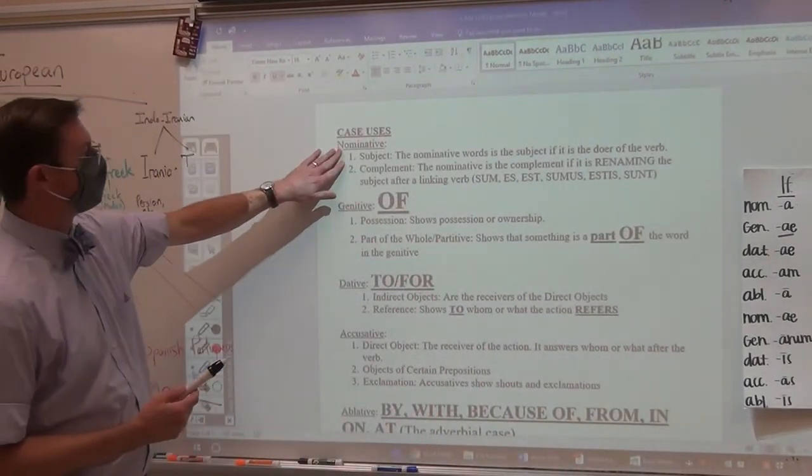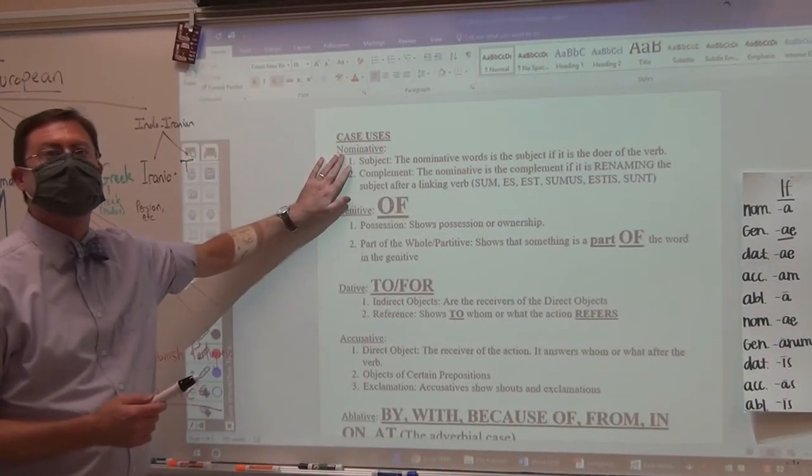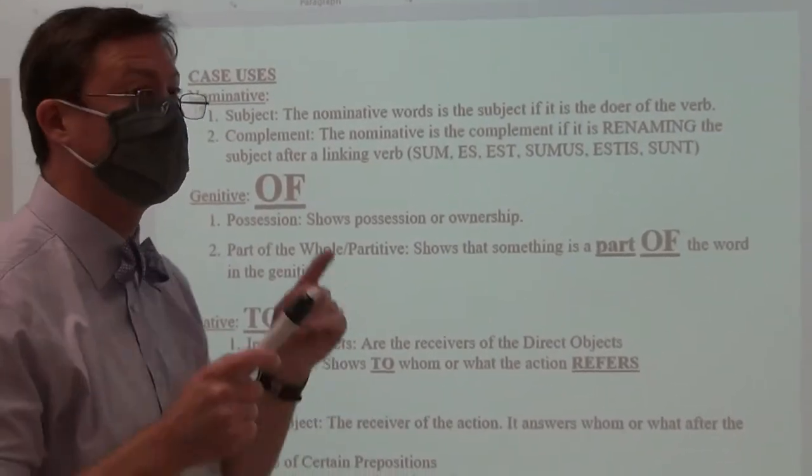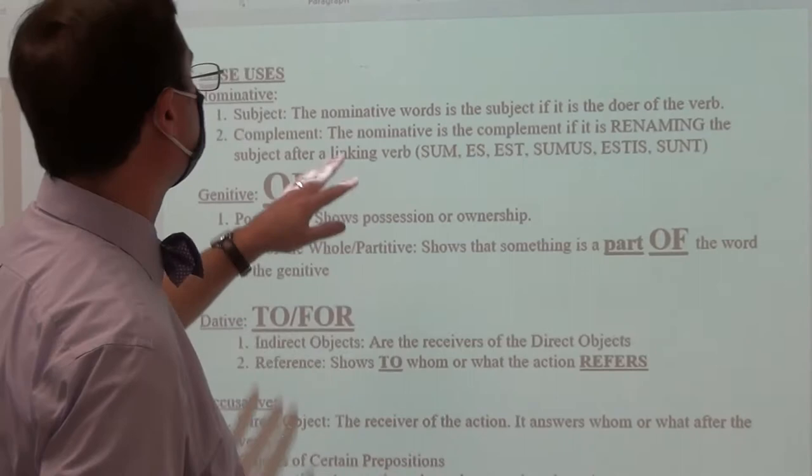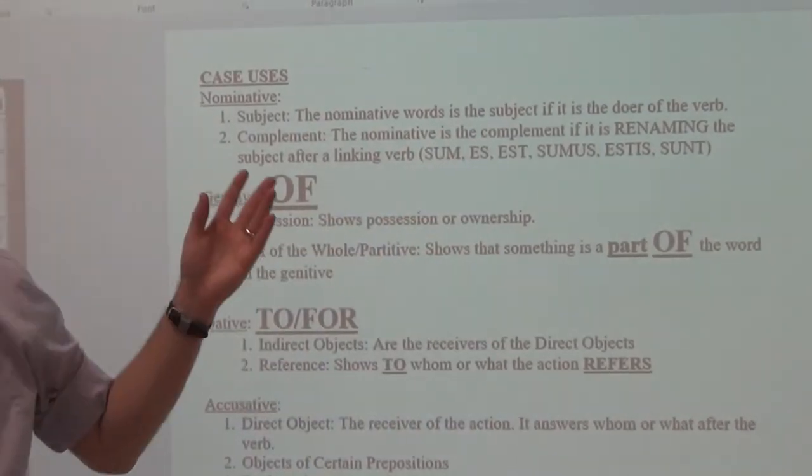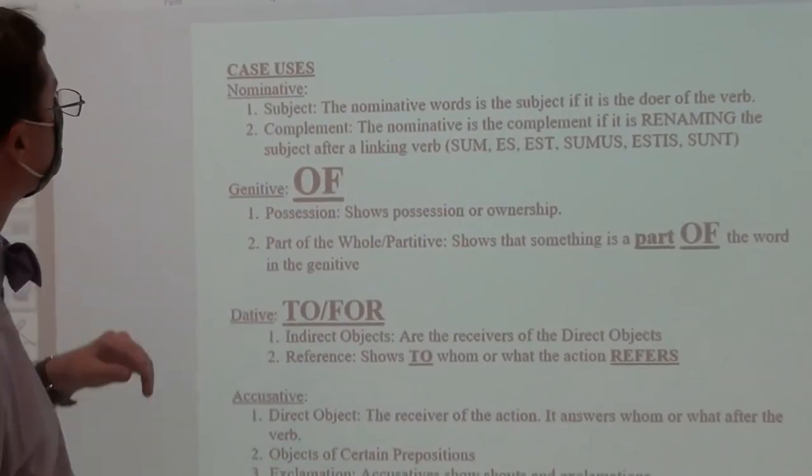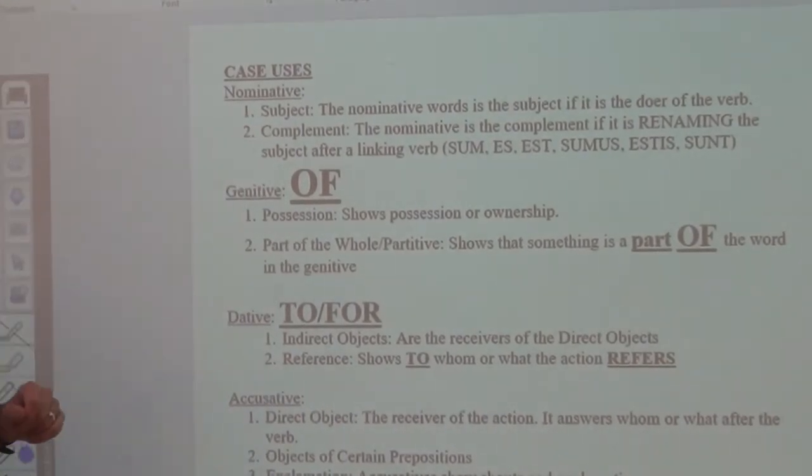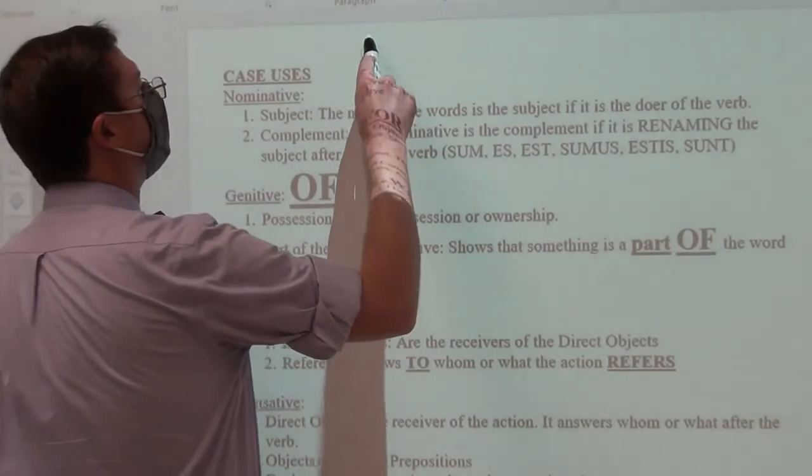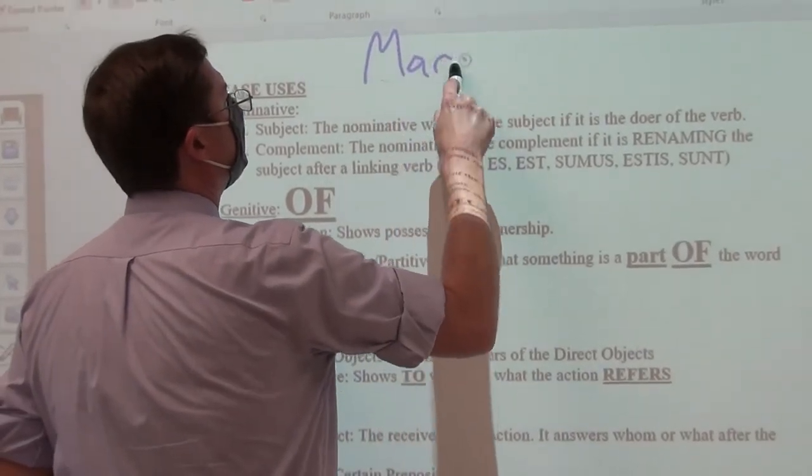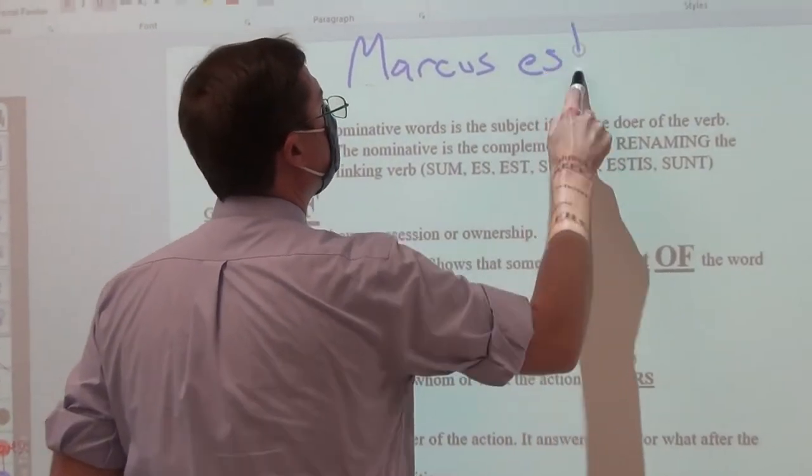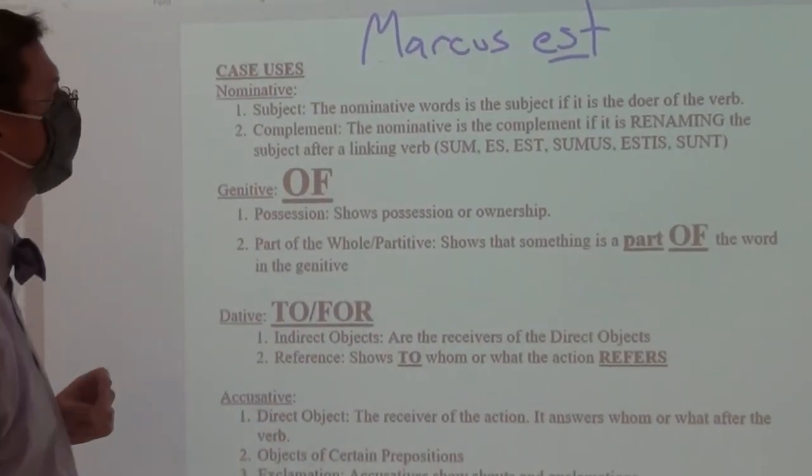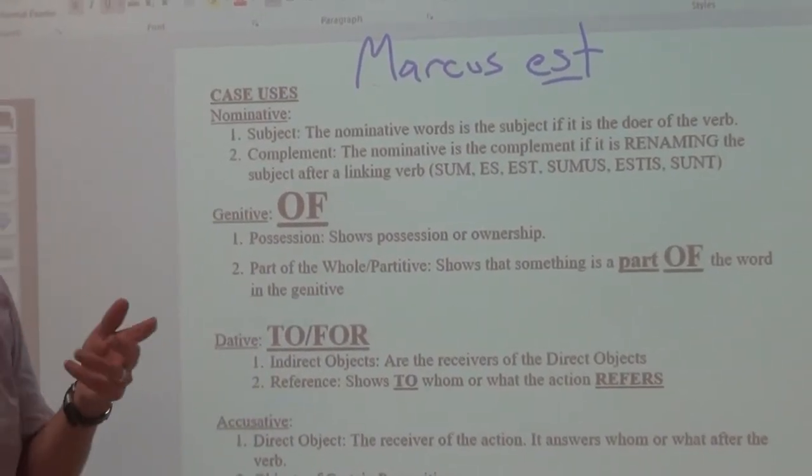So first and foremost is nominative case. Did some of you say subject? You should have. I say nominative, you say subject. And we all know the subject is the doer of a verb. I'm not going to write very much about that. That should be self-explanatory. Remember that you can also have the nominative as a complement. Meaning that if I were to have something along the lines of this right here, Marcus est, and it would have to use a linking verb, because that's what linking verbs do.